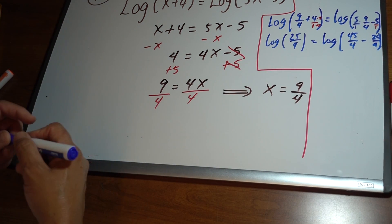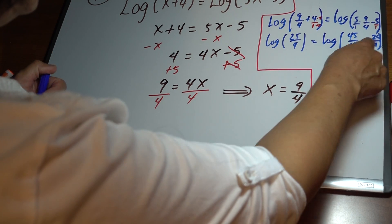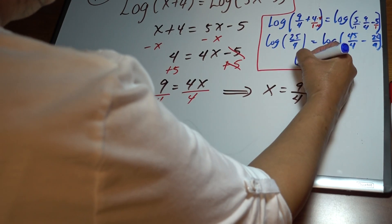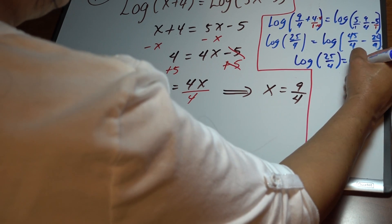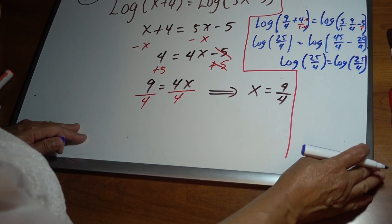45 fourths minus 20 fourths is 25 fourths. So you have log of 25 fourths equals log of 25 fourths. It works!